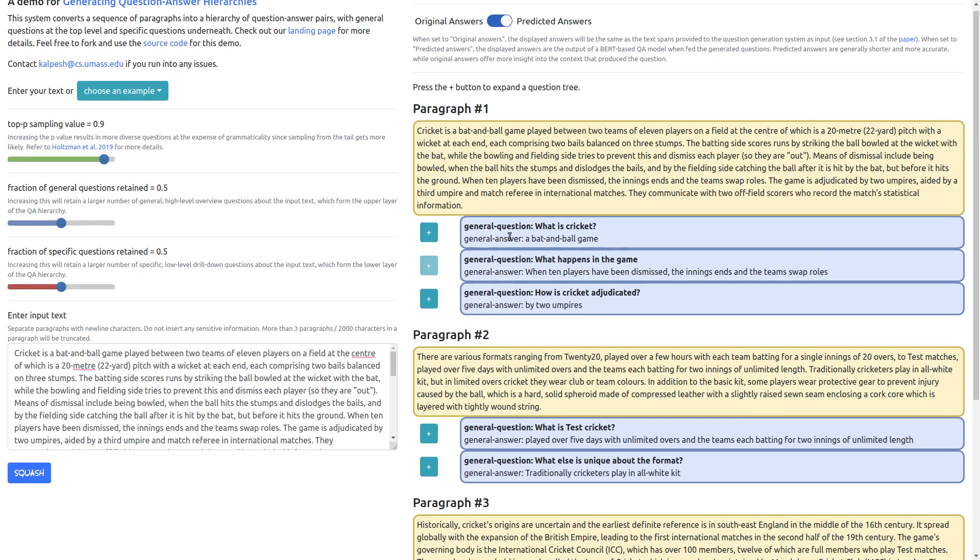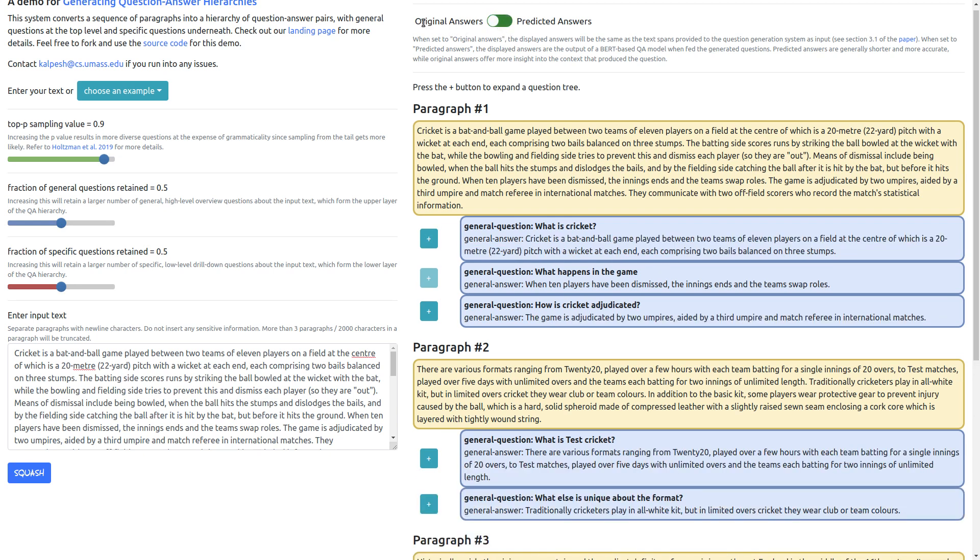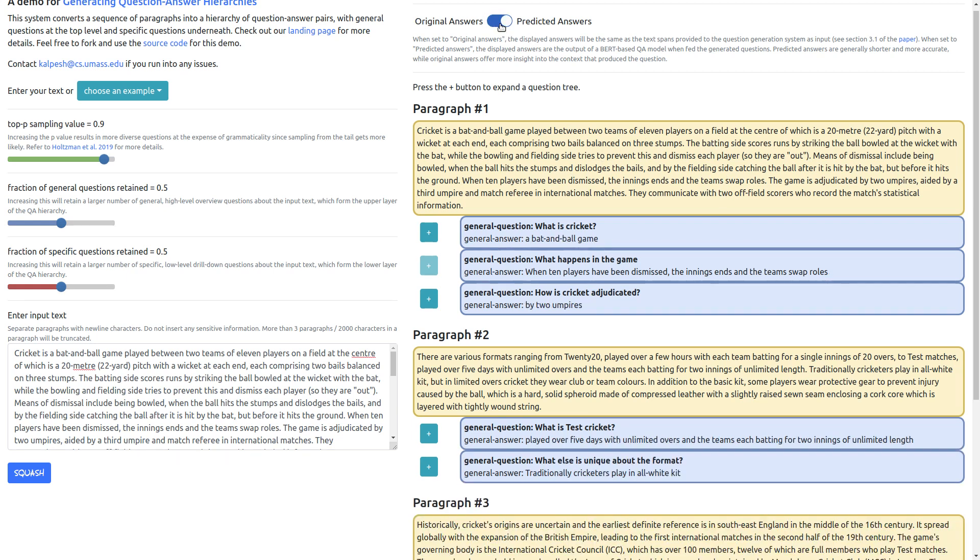And here you're able to generate for the three input paragraphs such a question-answer hierarchy. For example, for the first paragraph you have generated three general questions like what is cricket. And so actually you have also an option here to switch between answers generated through information retrieval by just matching the question to the input text, as well as predicted answers using a question answering system.